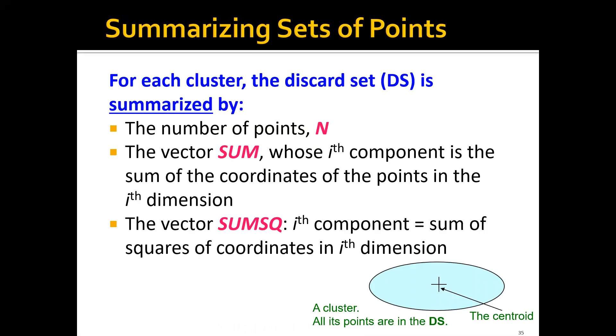So how do we summarize the points? For each cluster, the discard set is summarized by three parts of statistics. The first part would be the number of points, which is n. The second part would be the vector sum - summing up all the data points. For example, if we have each point of dimension d, then the vector sum will also be of dimension d. The ith component of the sum is the sum of the coordinates of the points in the ith dimension. The third part of the statistic would be the sum of squares or sum sq. Its ith component equals the sum of squares of coordinates in the ith dimensions. This vector will later be used to compute the variance of the cluster.